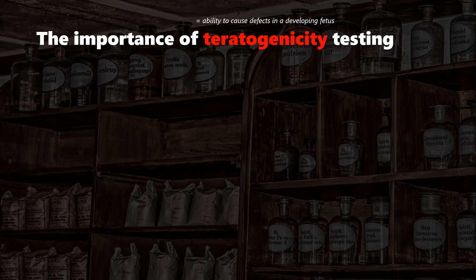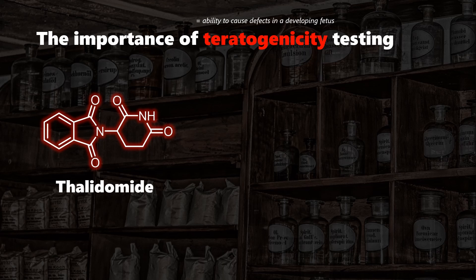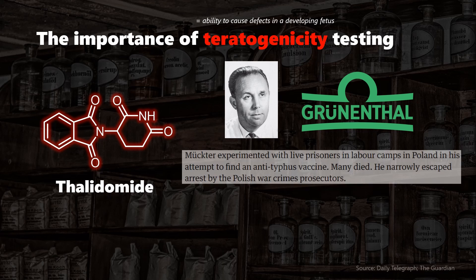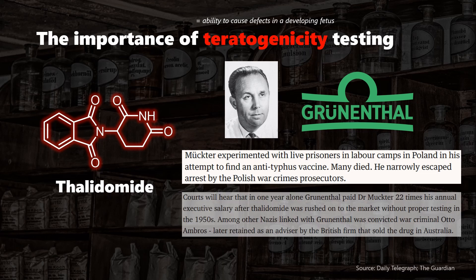Thalidomide has a very simple chemical structure. In the 1950s, the relatively small and inexperienced pharmaceutical company Chemie Grünenthal was looking for new antibiotics. Instead of antibiotic activity, thalidomide seemed to be a great sedative and help with sleep or nausea.